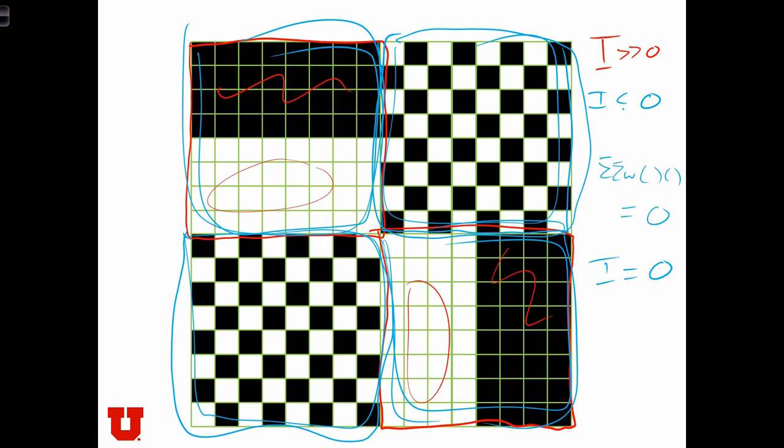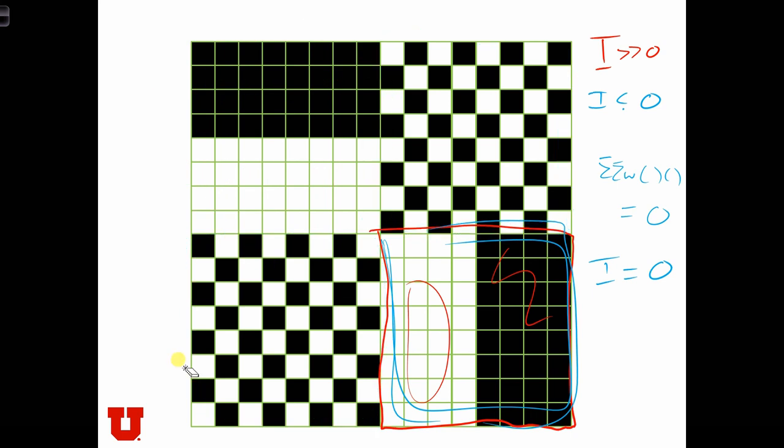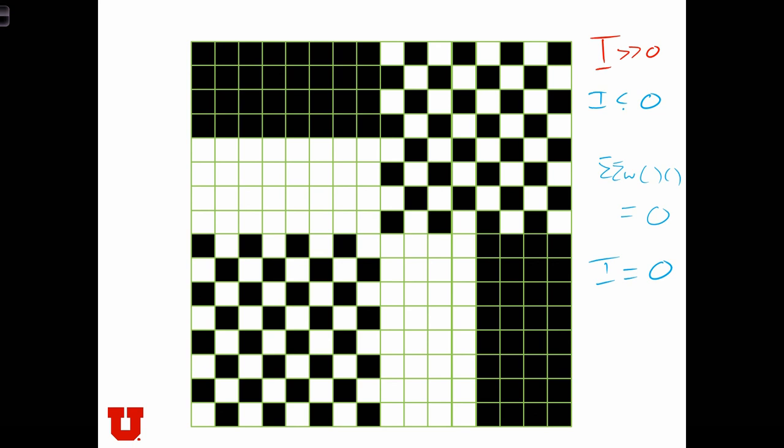So the global statistic is telling us that there's no spatial pattern in this map, which is clearly a misrepresentation of the true spatial pattern. And this is another argument for why we need to use local Moran's I.